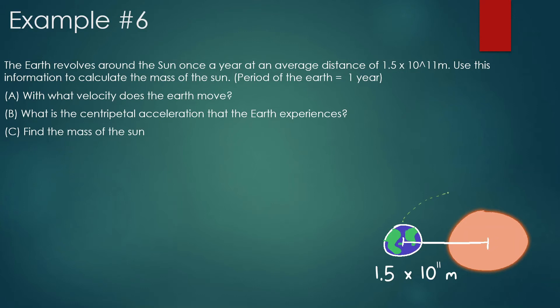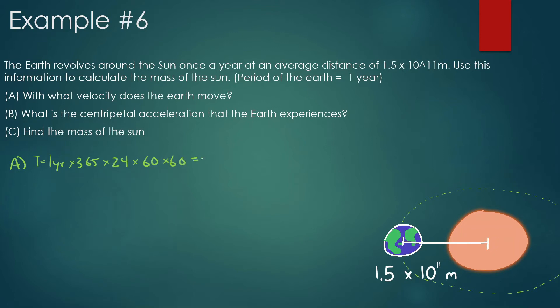We know it takes one year for Earth to orbit the Sun. One year equals 365 days, one day is 24 hours, one hour is 60 minutes, and one minute is 60 seconds. So the period in seconds is 365 times 24 times 60 times 60.